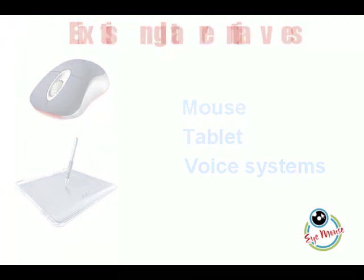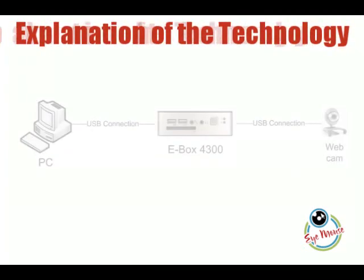The prototype will consist of three parts. One, the user's PC, which will have the client application installed on. Two, the E-Box 4300, which will be used to process the main eye tracking algorithms. Three, the webcam will be used to capture the image stream.